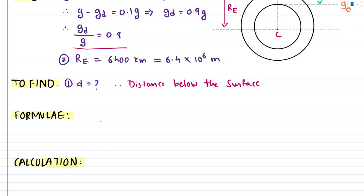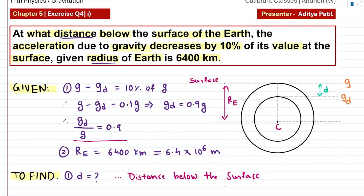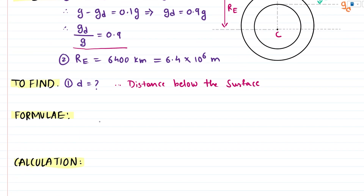Now let's look at the formula we can use to find this distance. This is a problem about the variation of gravity with depth d. The formula for the acceleration due to gravity at depth d is: gd equals g times (1 minus d upon R), where d is the distance below the surface and R is the radius of the earth. Substituting the given values into this formula will give us our distance.